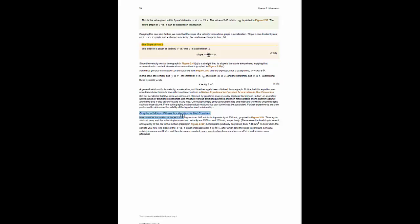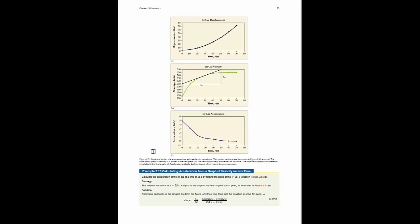Finally, the section moves into graphs of motion where the acceleration is not constant. So here we have a set of examples of an object moving with some non-constant acceleration and the related velocity and displacement graphs.